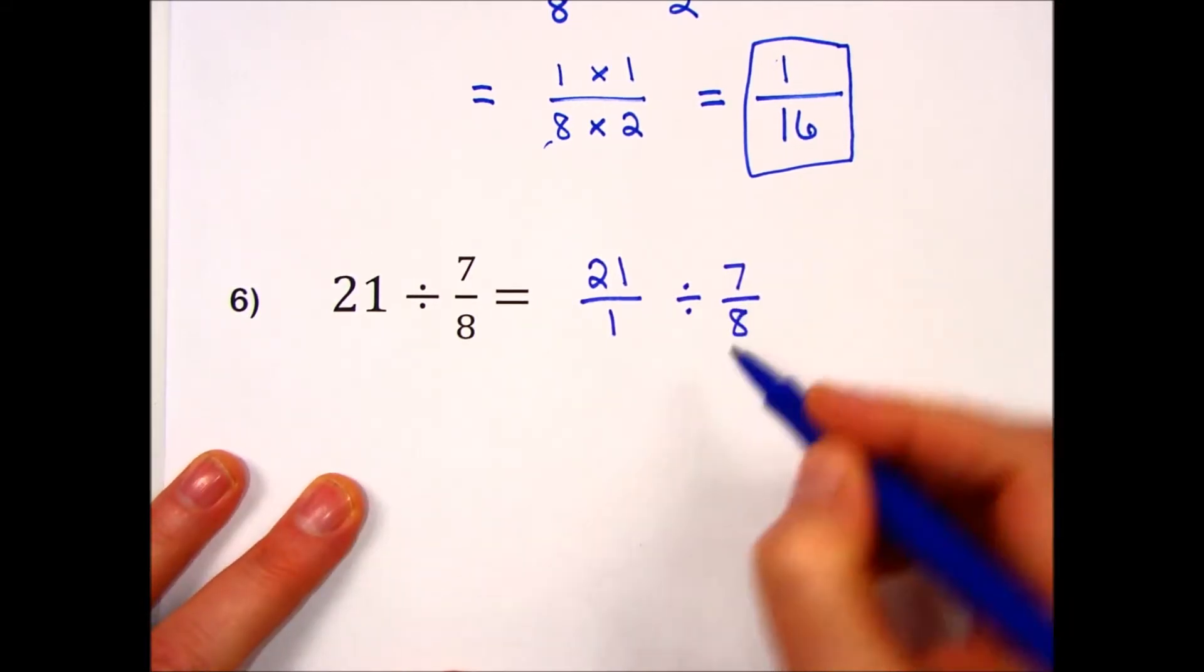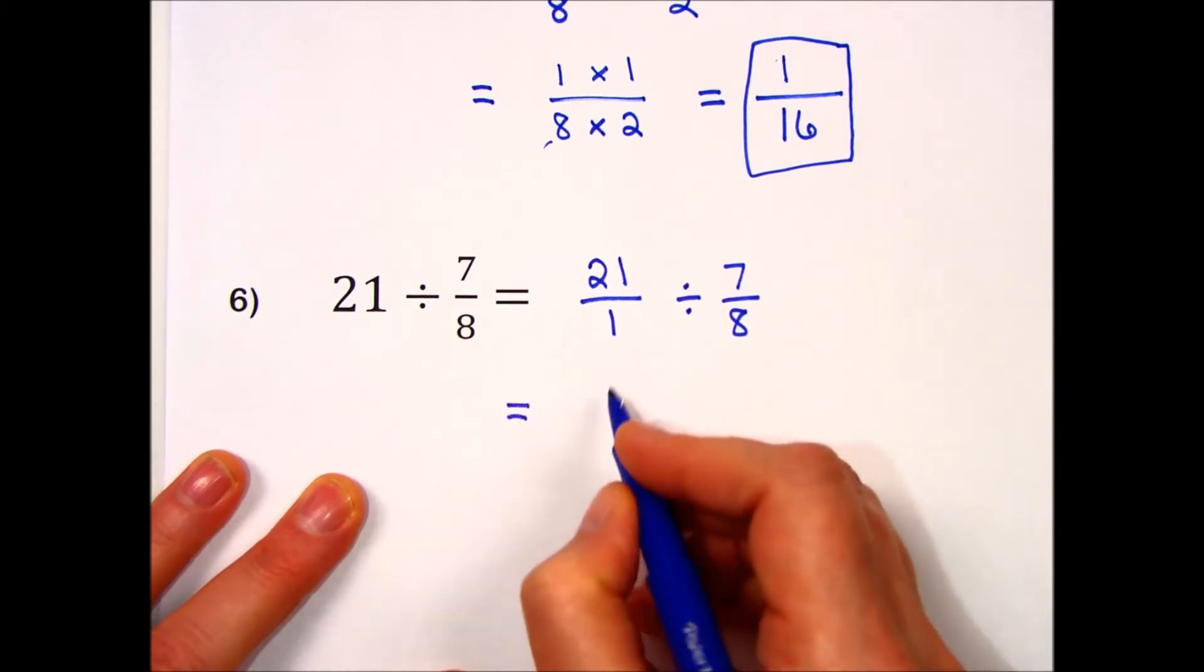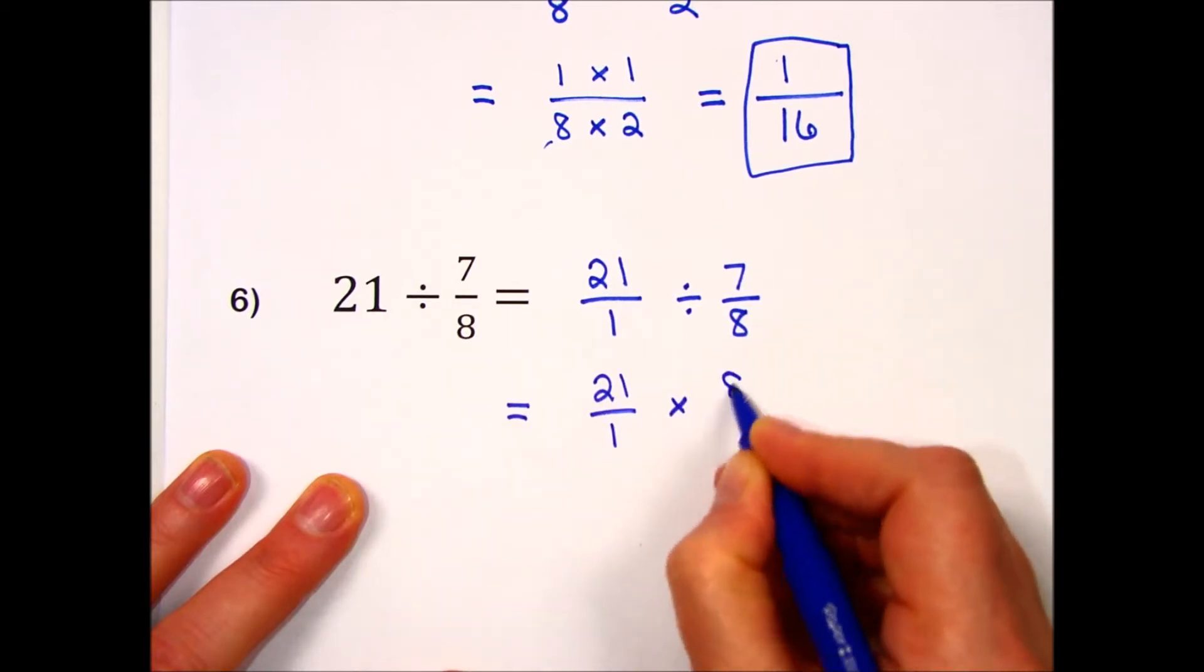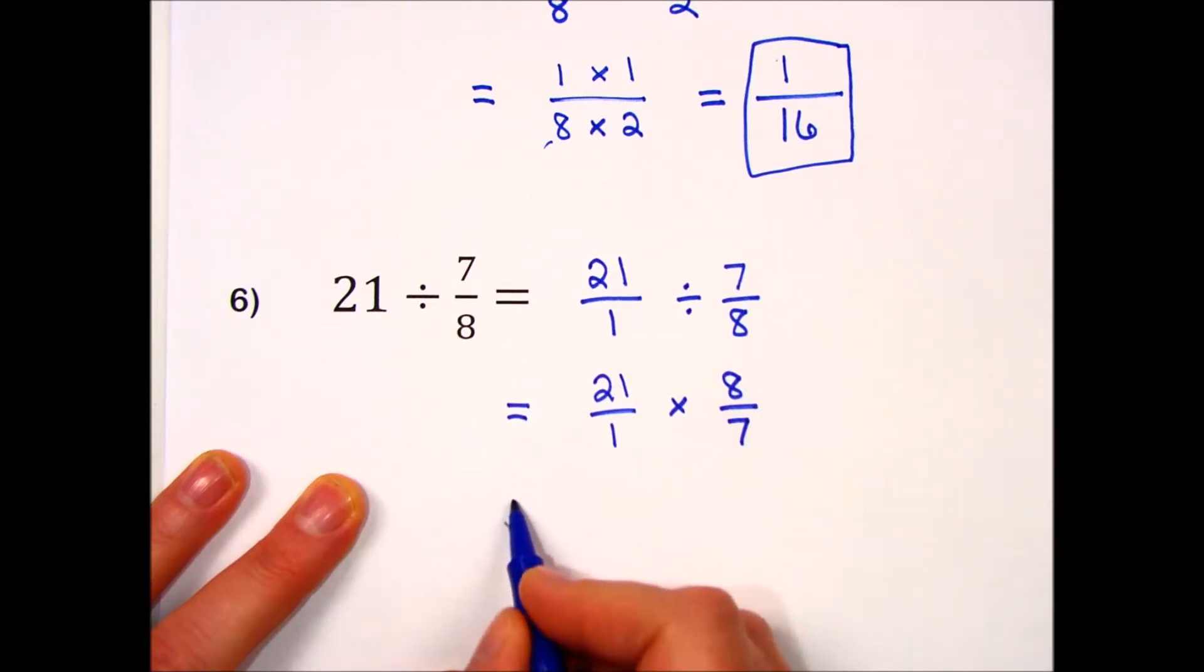The next step is to invert the second fraction so that we have a multiplication problem. I'm going to look at the cancellation technique.